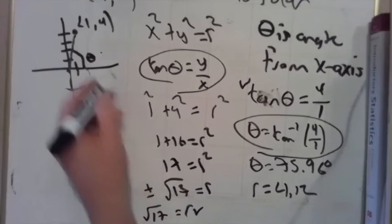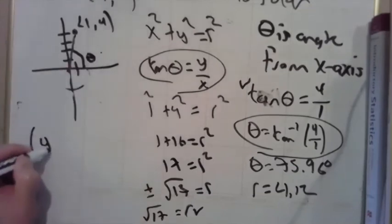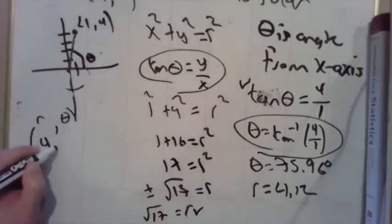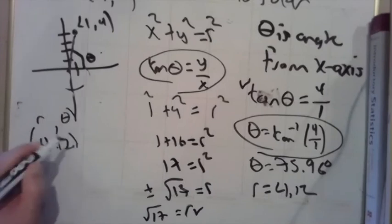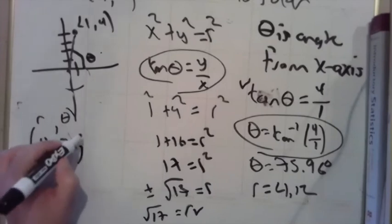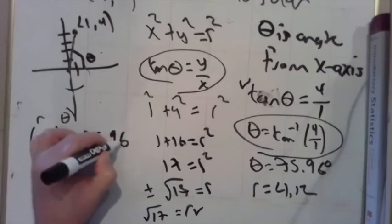So I can write this point here as the point, remember we always want to do r, theta: 4.12 comma 75.96 degrees.